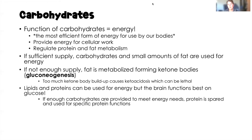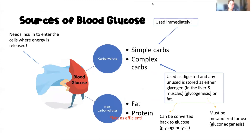We really don't want to constantly be breaking down fat for energy. We want a good enough supply of carbohydrates as our primary energy source, with only small, safe amounts of fat being metabolized. Lipids and proteins can also be used for energy, but our brain functions best on glucose — it won't work nearly as well unless the majority of energy is coming from carbohydrates. If enough carbohydrates are provided, protein will be spared for specific protein functions and fat will be spared for specific fat functions.